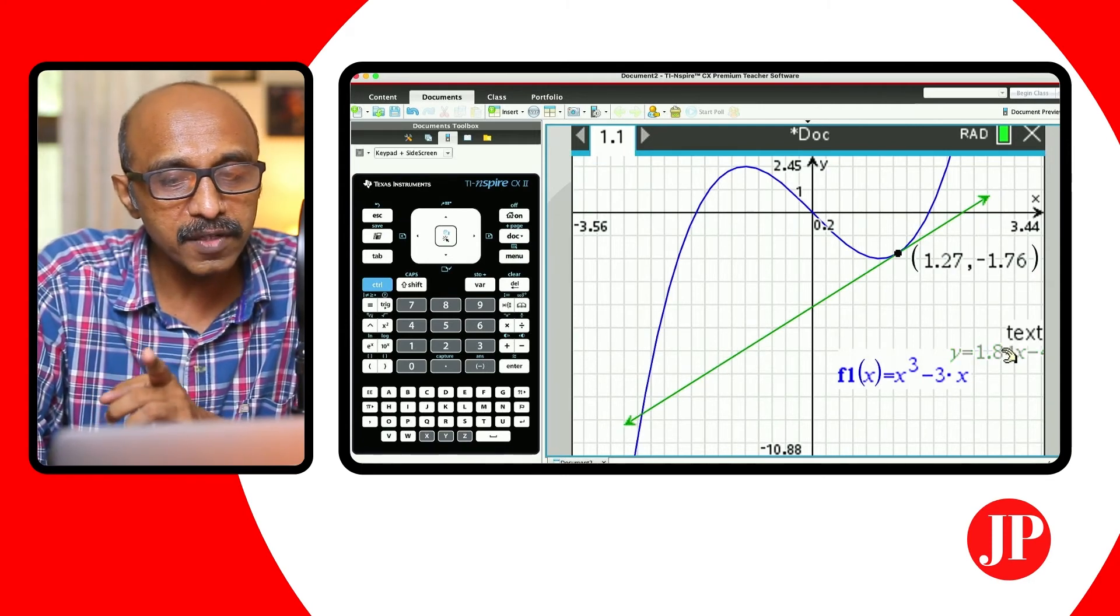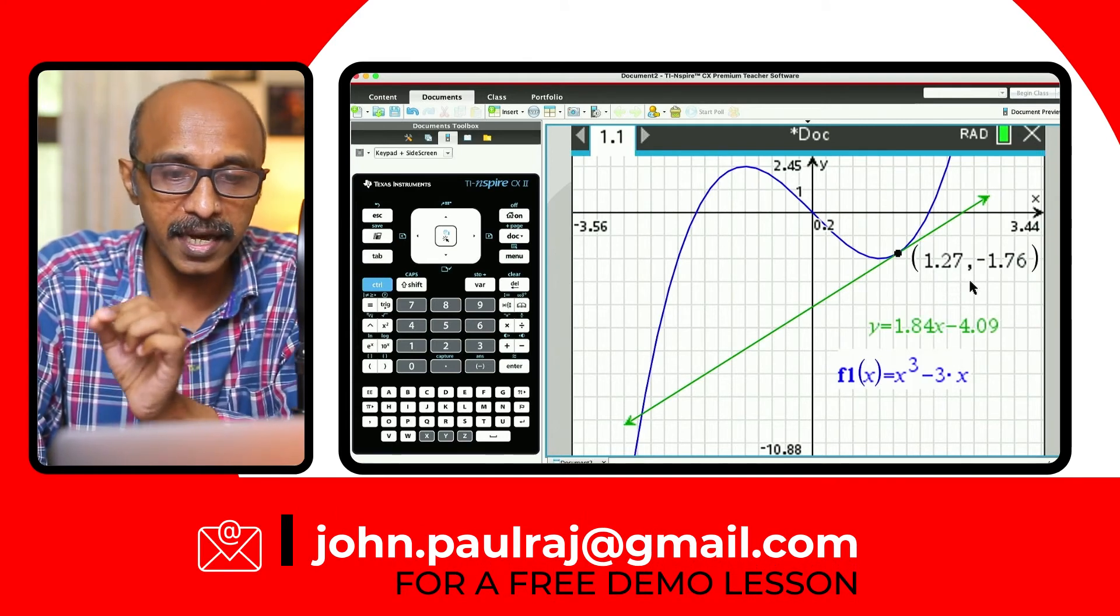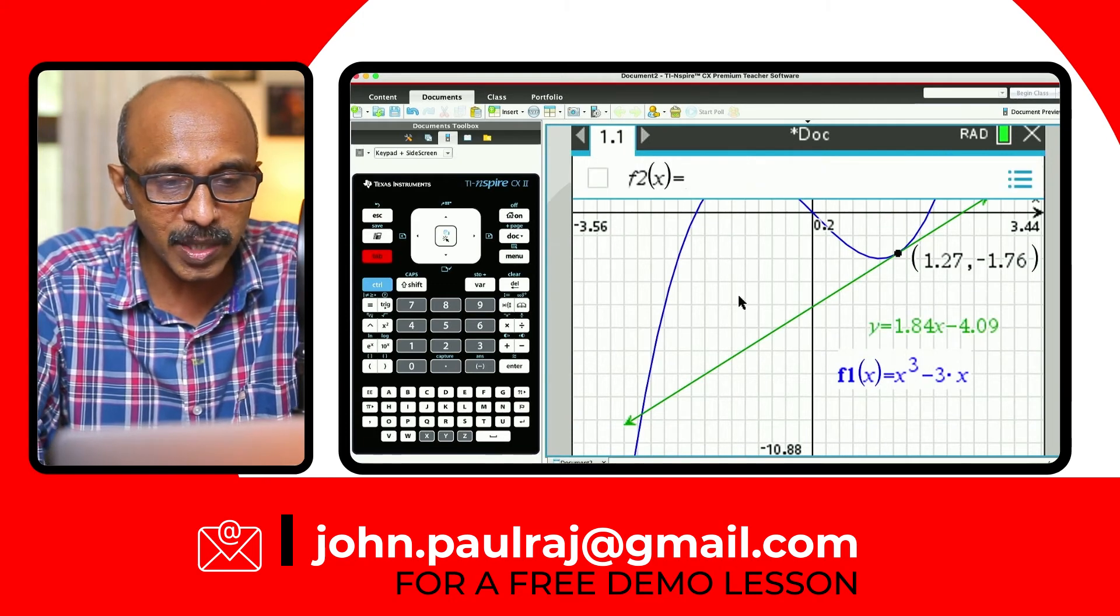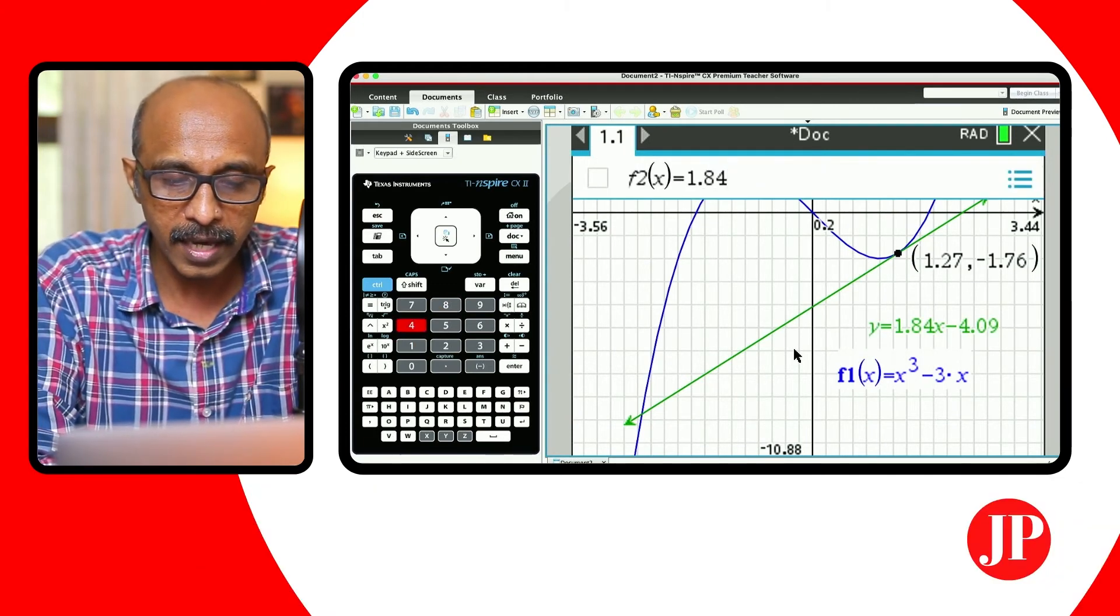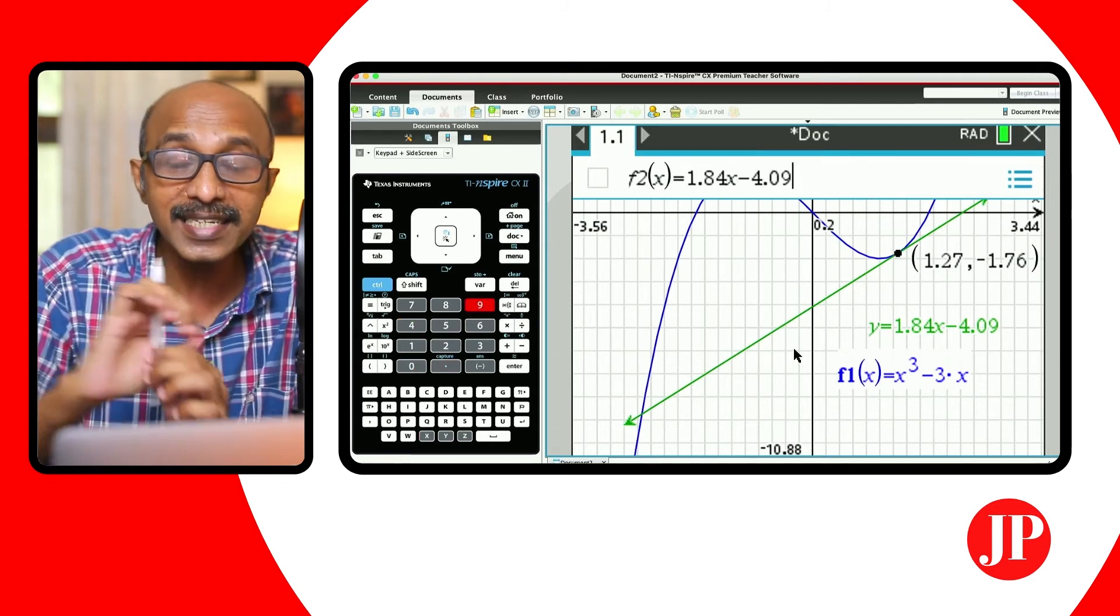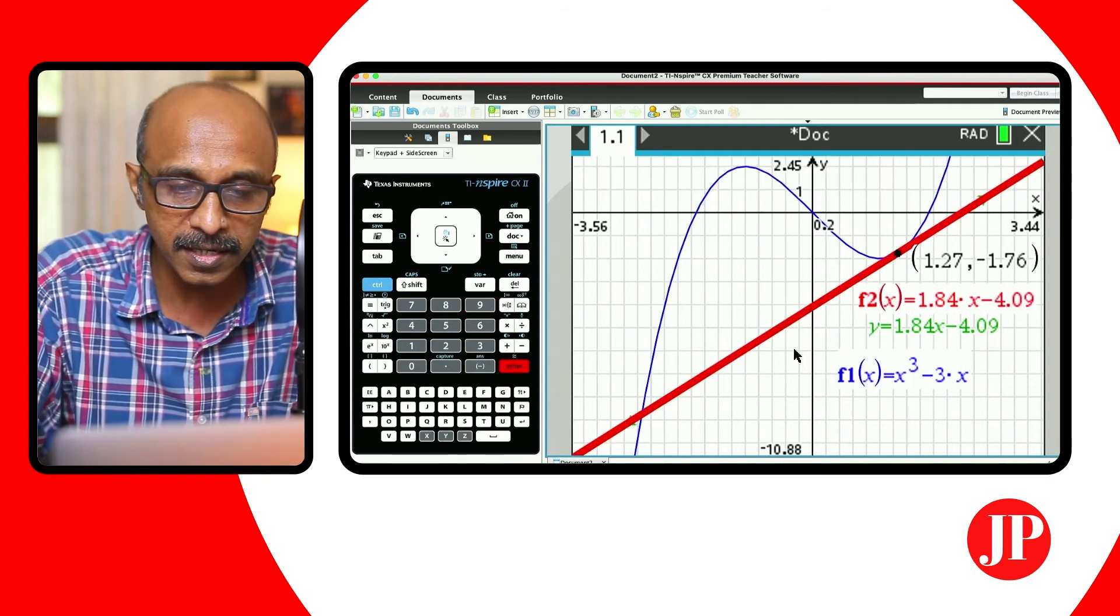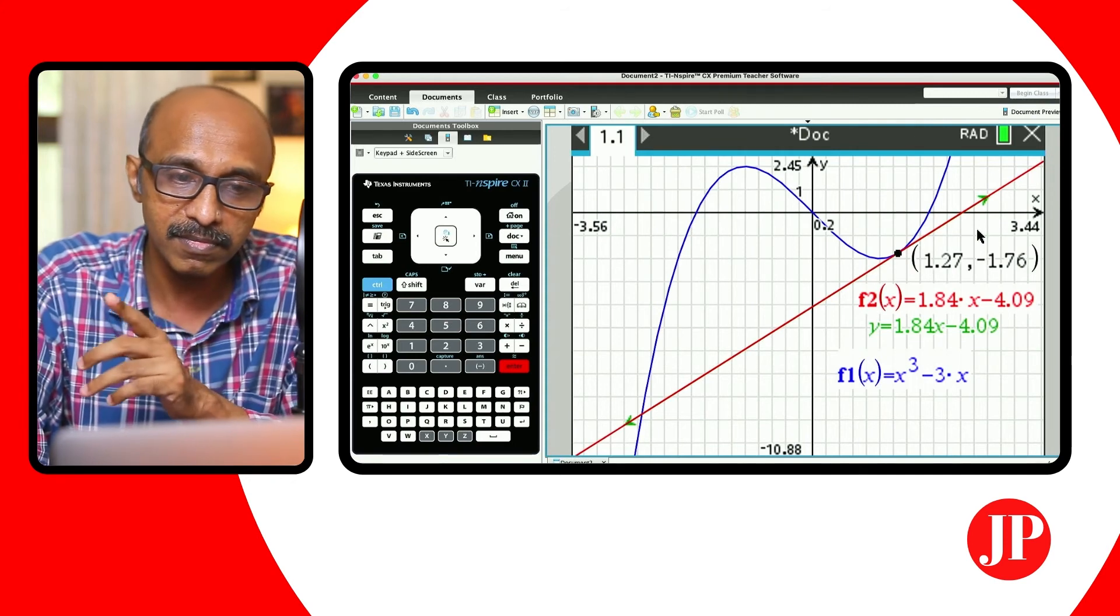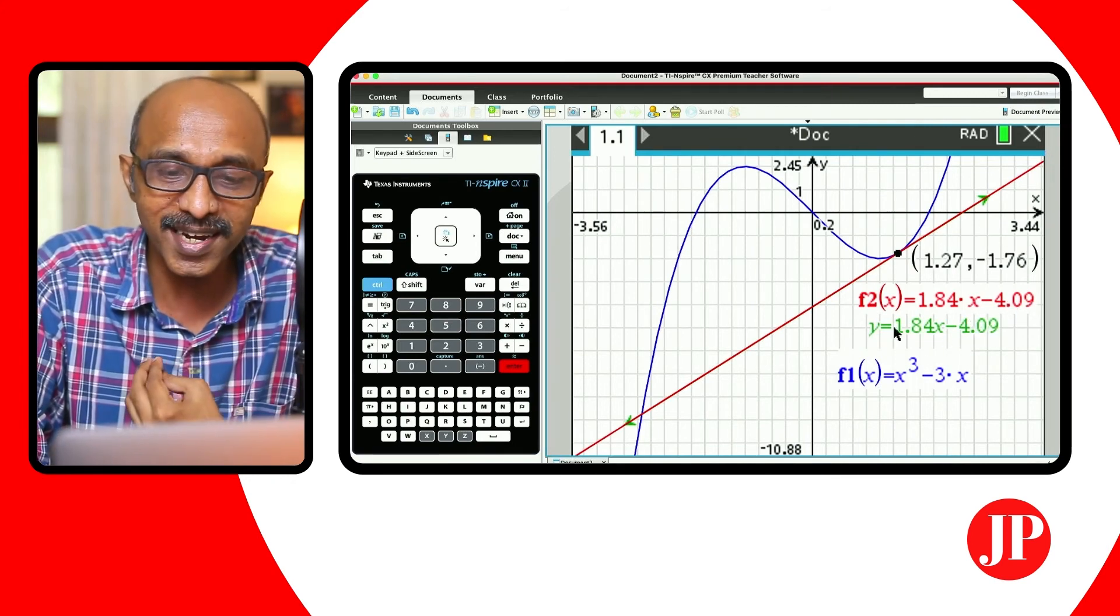When you do the tangent via geometry menu, you got that tangent line, you'd get this equation of the tangent automatically. So you can just enter that equation as it is. So 1.84x minus 4.09. So whatever the tangent was, you've entered it as a function, but what's going to happen is when you hit enter, you've got a new function on the line. Now that's a function. Even this is a function by the way, but the calculator is not recognizing this as a function.